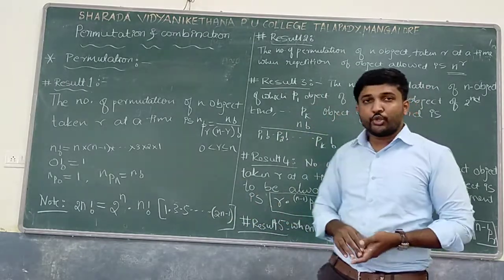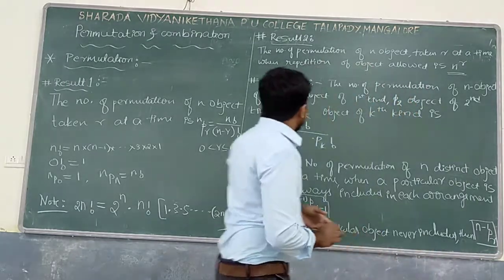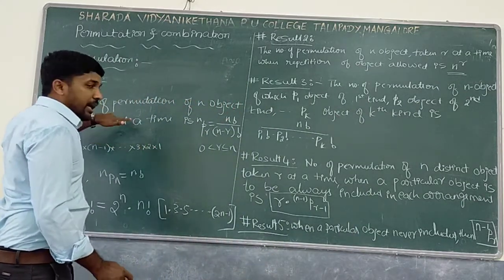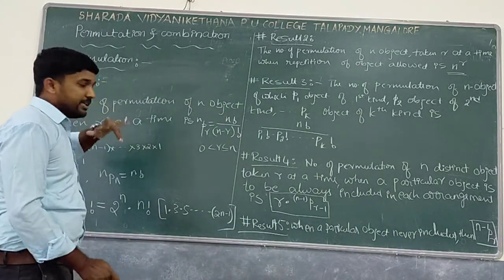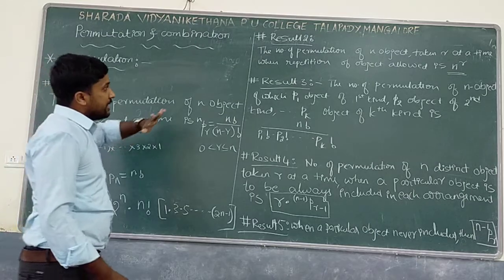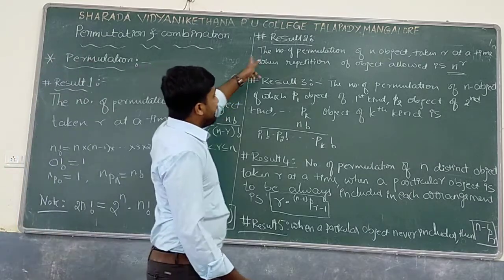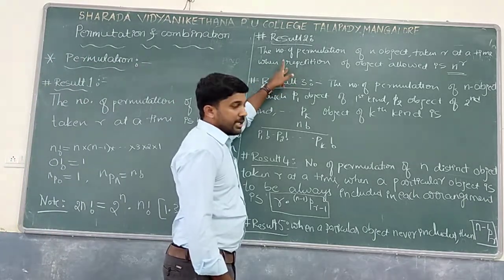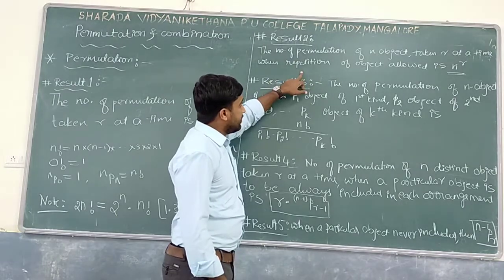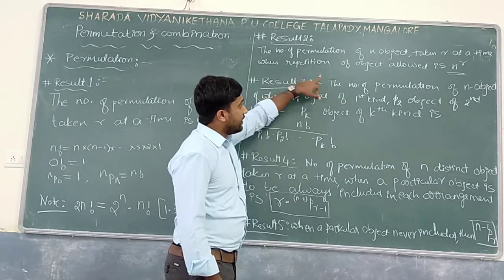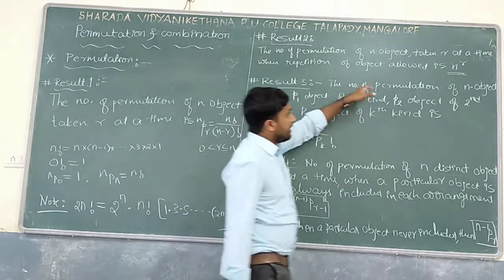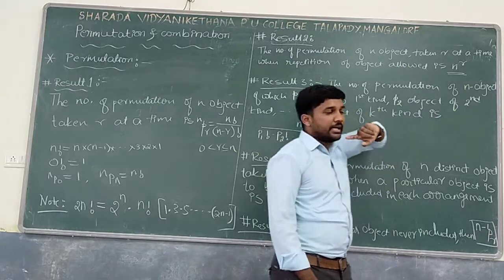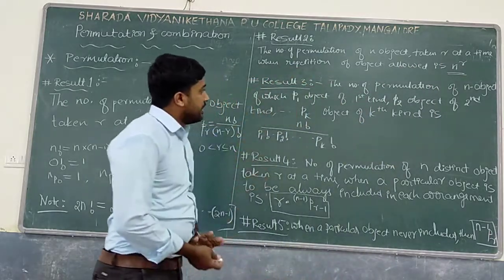Result 2: In the first result, we took r distinct objects. Suppose repetition of objects is allowed — out of n objects, r objects are taken where repetition is allowed — then the number of permutations is n to the power r.